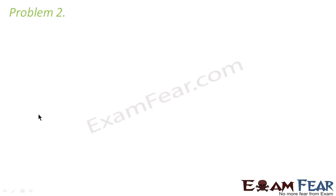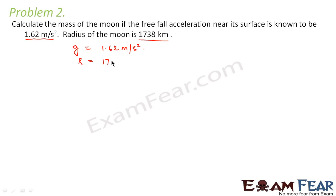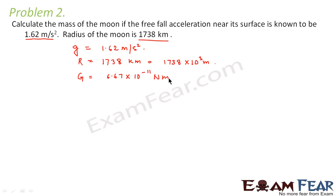Now let us look at the next problem. Problem 2 says: calculate the mass of the moon if the free-fall acceleration near its surface is known to be 1.62 m/s². Radius of the moon is 1738 kilometers, which converts to 1738 × 10³ meters. We also know G = 6.67 × 10⁻¹¹ N·m²/kg².